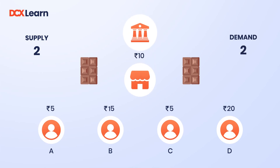But one day the government decided to give 10 rupees to everyone. Now A has 15, B has 25, C has 15, and D has 30. But now there are still only two chocolates. The demand rose from two chocolates to four, but the supply remained the same. So the shopkeeper will raise the price of chocolates from 10 to 20 rupees to meet the demand. This is why banks will never print unlimited money — to keep inflation under control.